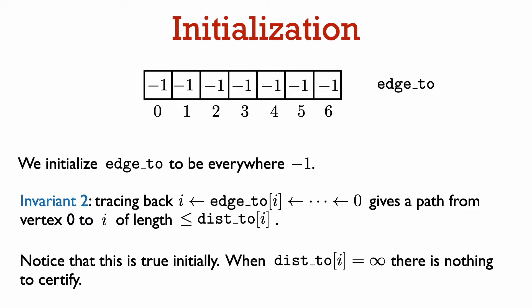In other words, if you start at vertex i, then go backwards to vertex edge2[i], from there go backwards to vertex edge2[edge2[i]], and keep going backwards until you reach vertex 0 — then following these vertices in reverse order gives a path from vertex 0 to vertex i of length at most dis2[i]. We initialize the edge2 array to be negative 1 everywhere. This satisfies invariant 2 because when dis2[i] is infinity, the edge2 array does not actually need to provide a path to vertex i from vertex 0.